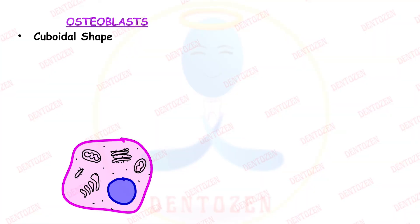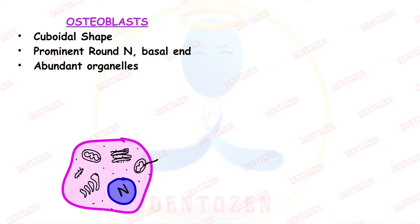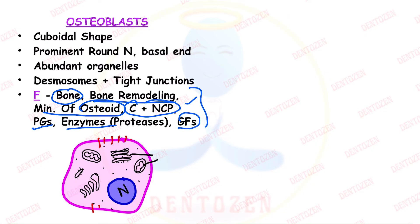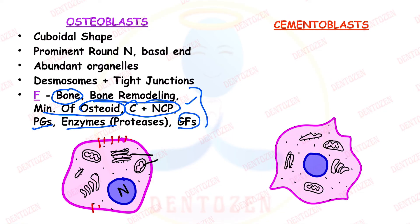Osteoblasts are cuboidal shaped cells with a prominent round nucleus located at the basal end of the cell. They have abundant organelles as synthetic cells, desmosomes between adjacent cells, and tight junctions. Their functions include bone formation, bone remodeling, mineralization of osteoid, collagenous and non-collagenous protein formation, proteoglycans, enzymes, and growth factors.